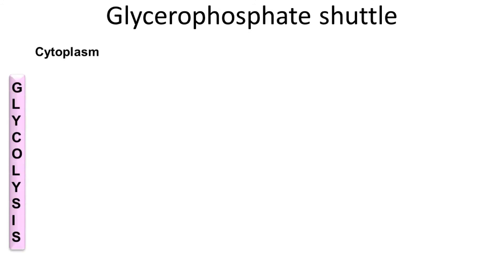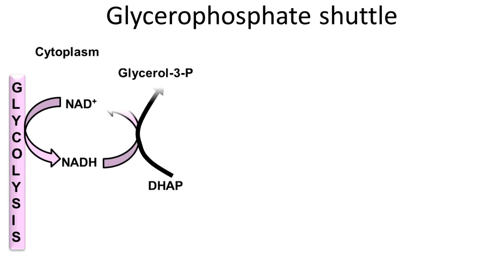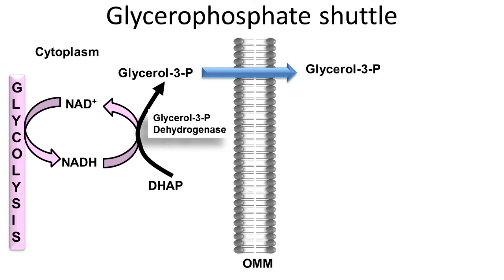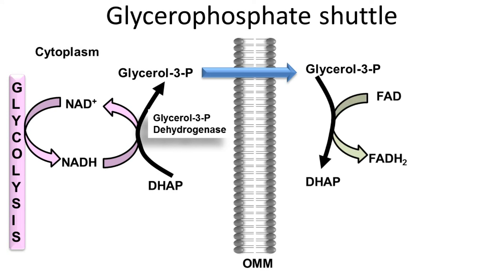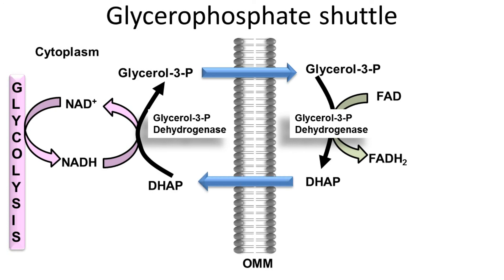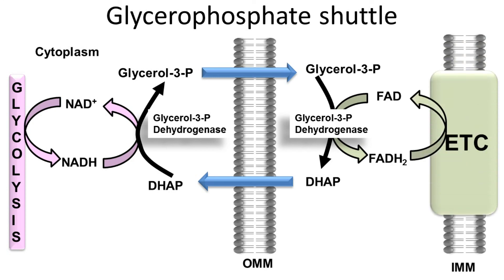Another way to move NADH into the mitochondria is through the glycerophosphate shuttle. The energy in NADH produced in glycolysis is passed to glycerol-3-phosphate, facilitated by glycerol-3-phosphate dehydrogenase in the cytosol. G3P then passes through the outer mitochondrial membrane into the intermembrane space, where it is used to make FADH2 by the same enzyme in the mitochondria. DHAP moves back into the cytosol and the electrons from FADH2 are utilized in the electron transport chain.